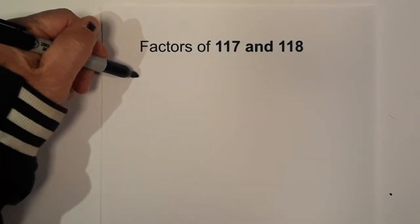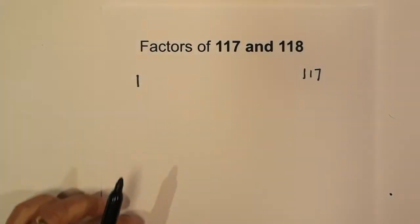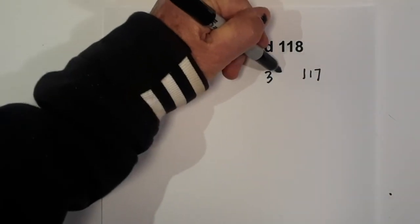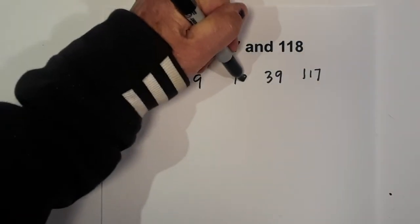For 117, let's go 1 times 117, next 3 times 39, and then 9 times 13.